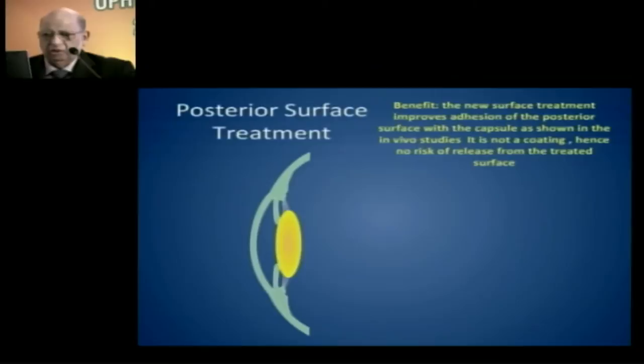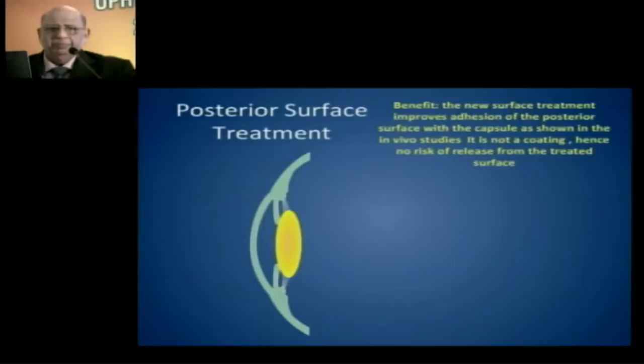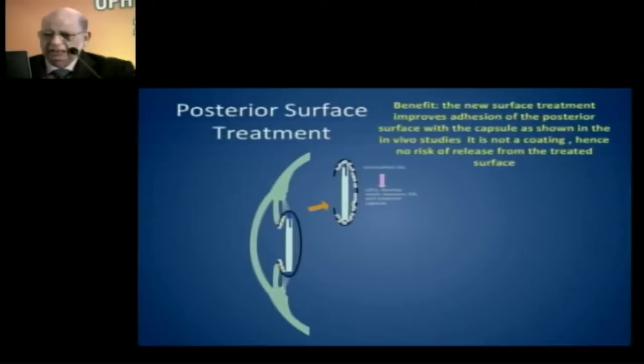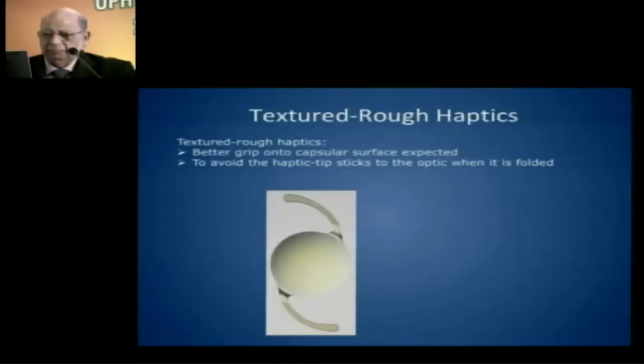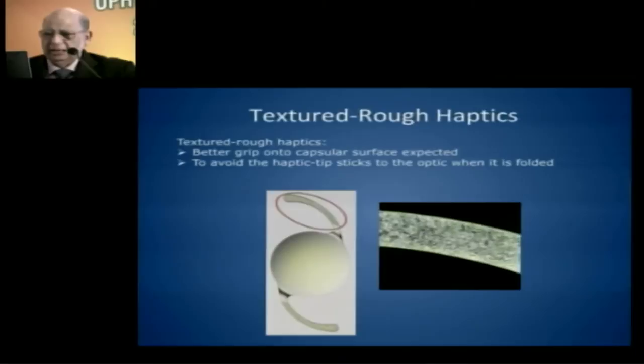The posterior surface is treated — it is not a coating — so there is no risk of release from the treated surface. The question often asked is whether the treatment diminishes over time, wears off, or leaches into the anterior chamber. That does not exist. The other advantage is increased adhesive ability of the material, which cuts down on capsular thickening and helps with posterior PCO. Rough haptics provide better grip and prevent growth along the sides.